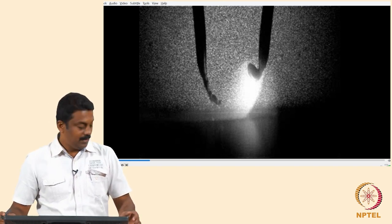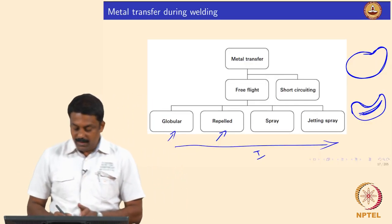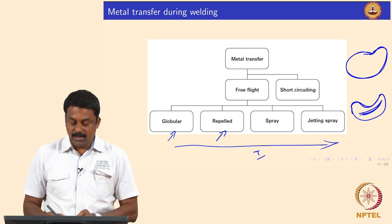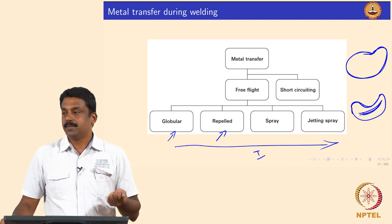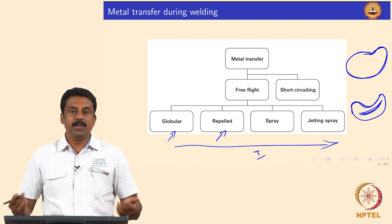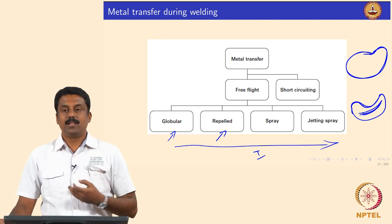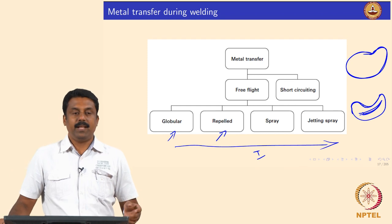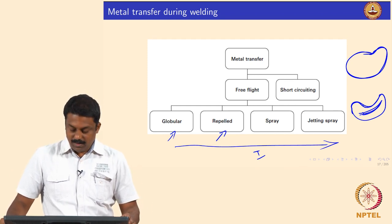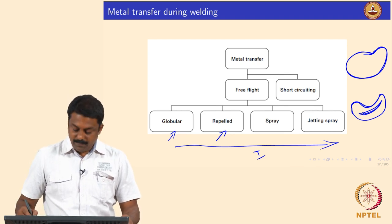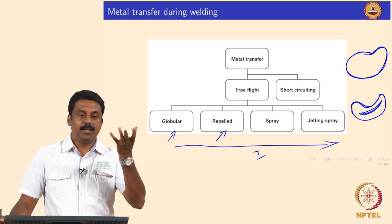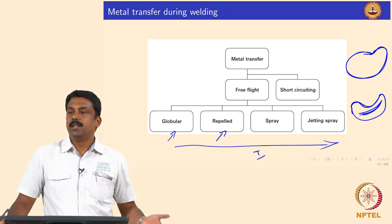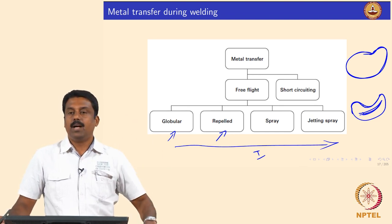If the current is increased further, the globular transfer becomes spray transfer when the Lorentz force supersedes gravitational forces. If you keep increasing further, you also start melting more — at very high current you start making a jetting spray and the spray velocity becomes much higher. These four modes are commonly observed during GMAW welding and are known as free flight, because the droplets are transferred from the tip to the workpiece with no contact between the consumable and the weld pool.